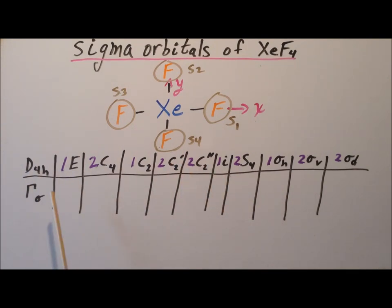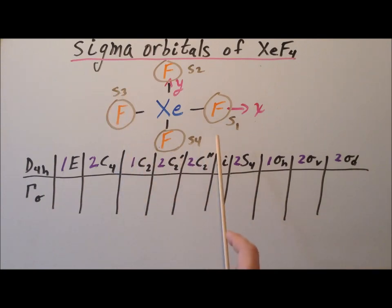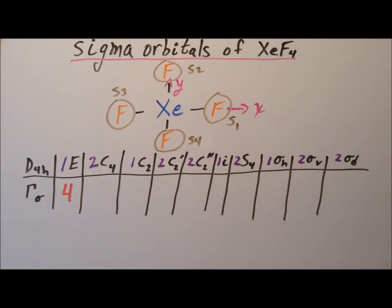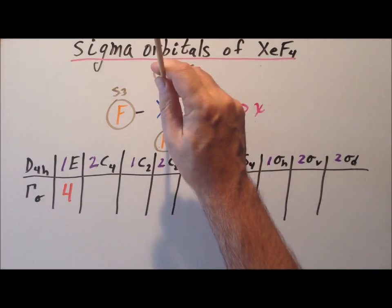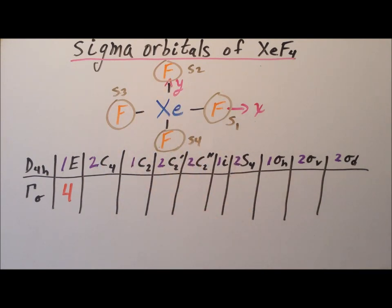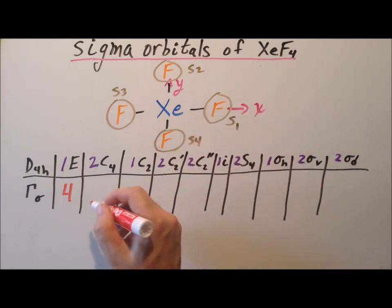The important thing is that under each column, we want to write down the number of sigma orbitals that do not change position under the symmetry operation. Under the E operation — the identity — each one of these four orbitals stays exactly where it is, so we write down 4. Our next symmetry operation is C4, the high-order rotation axis along the Z axis, perpendicular to the plane of the whiteboard. For both C4 operations — clockwise and counterclockwise — all of the S orbitals will move, so none stays put and we put down zero.